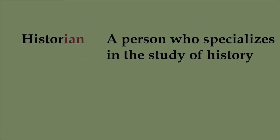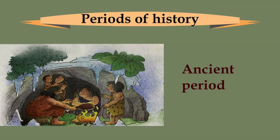History is a study of the past. A historian is a person who specializes in the study of history. Historians have divided history into three parts: ancient history, medieval history, and modern history.